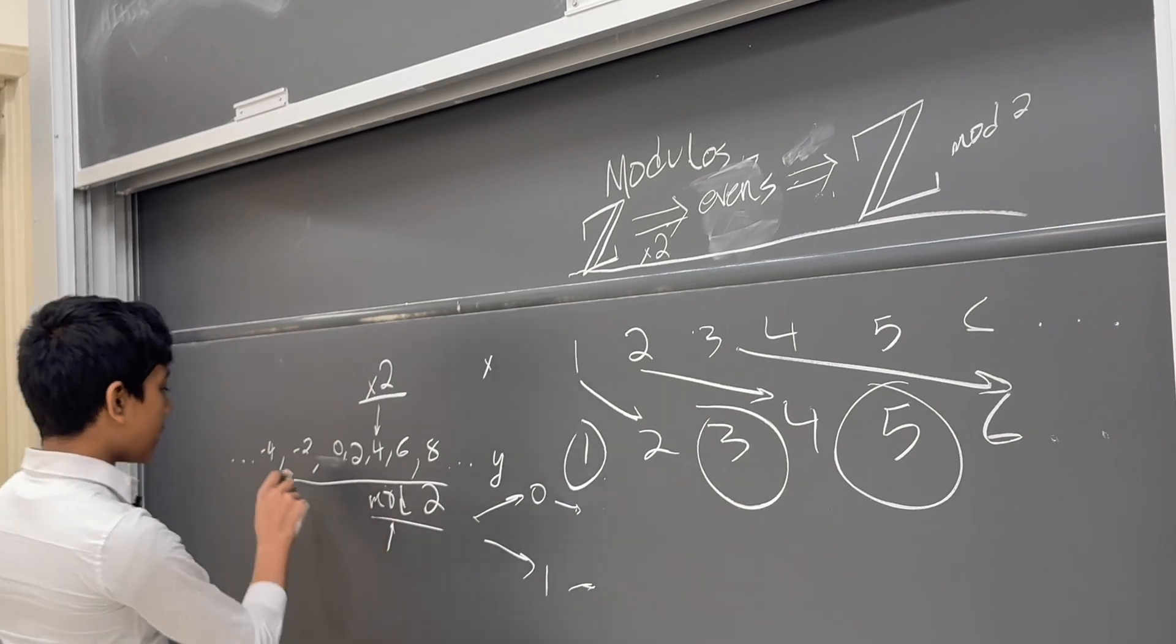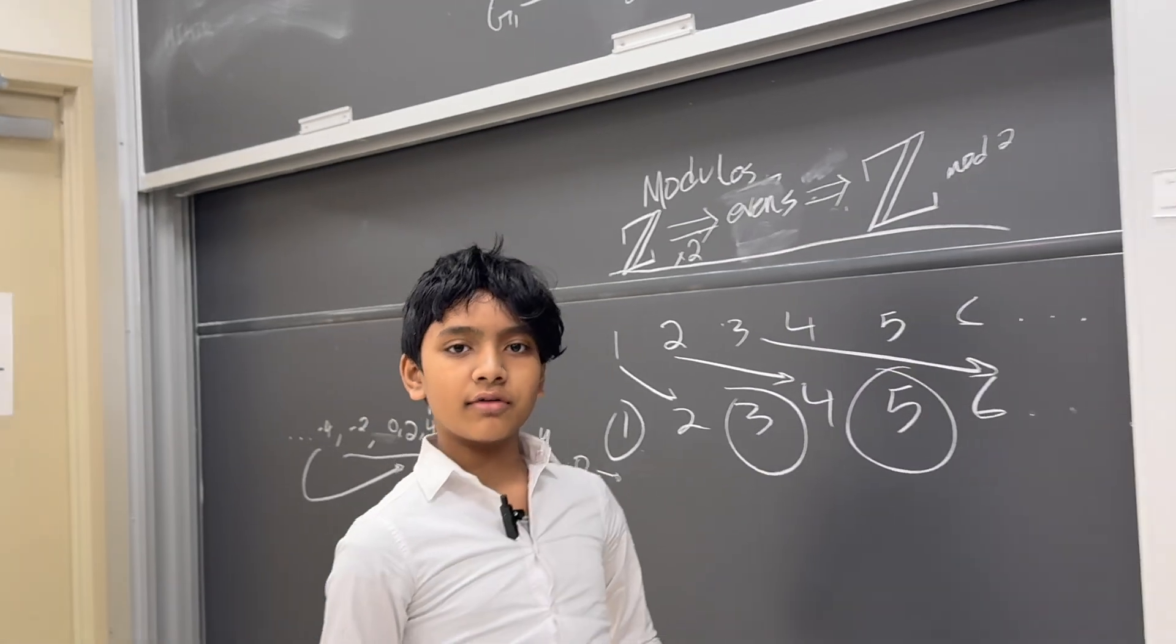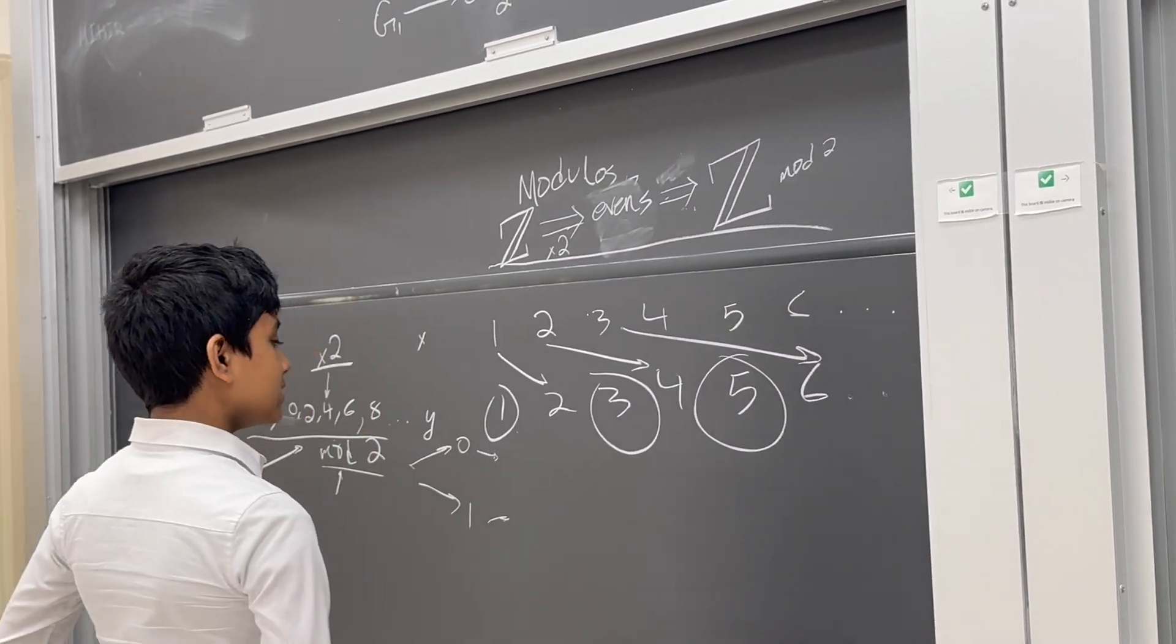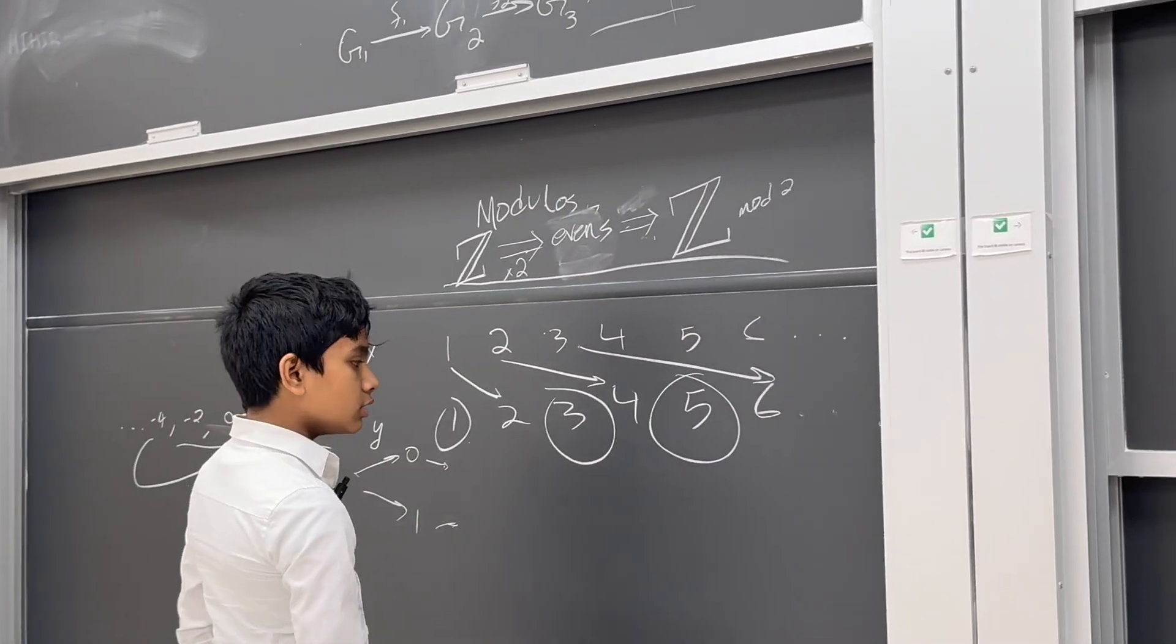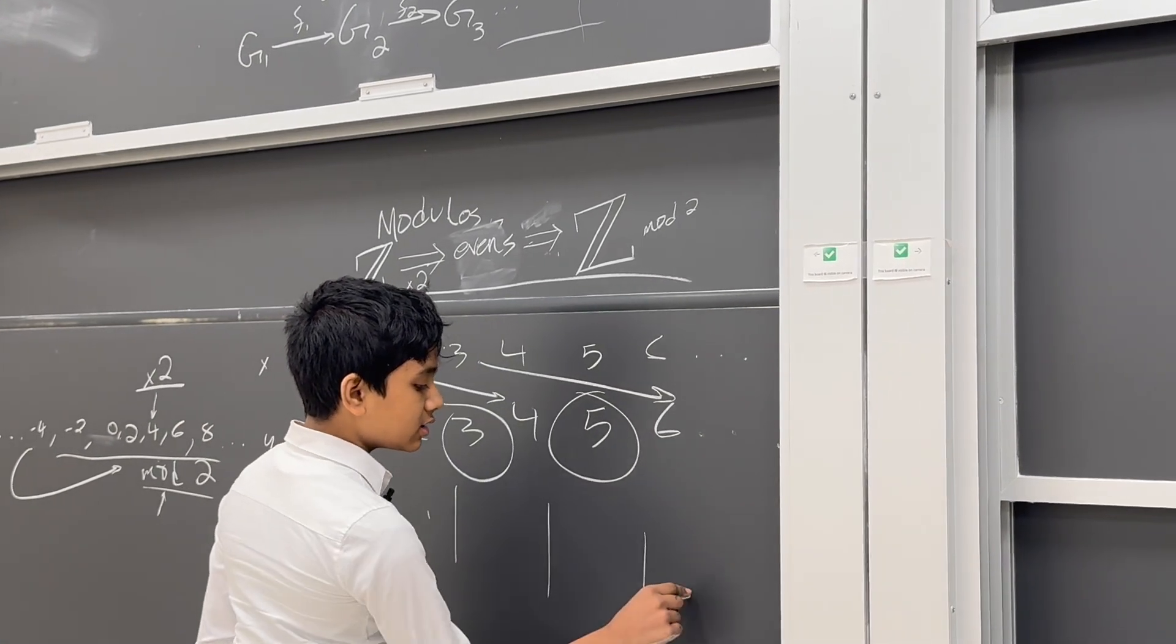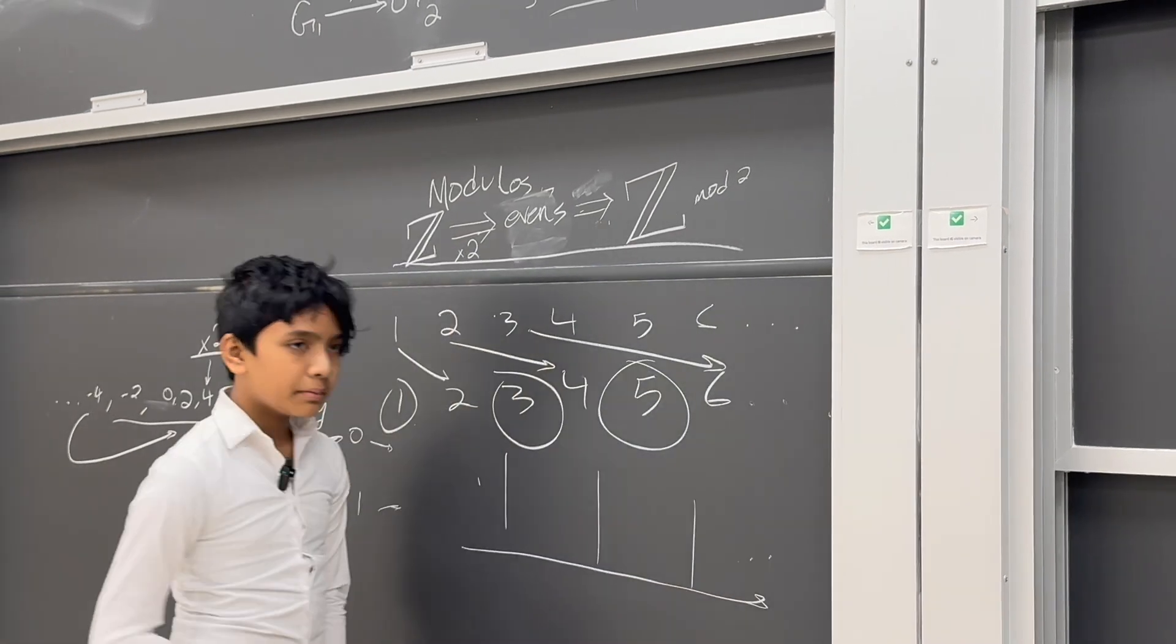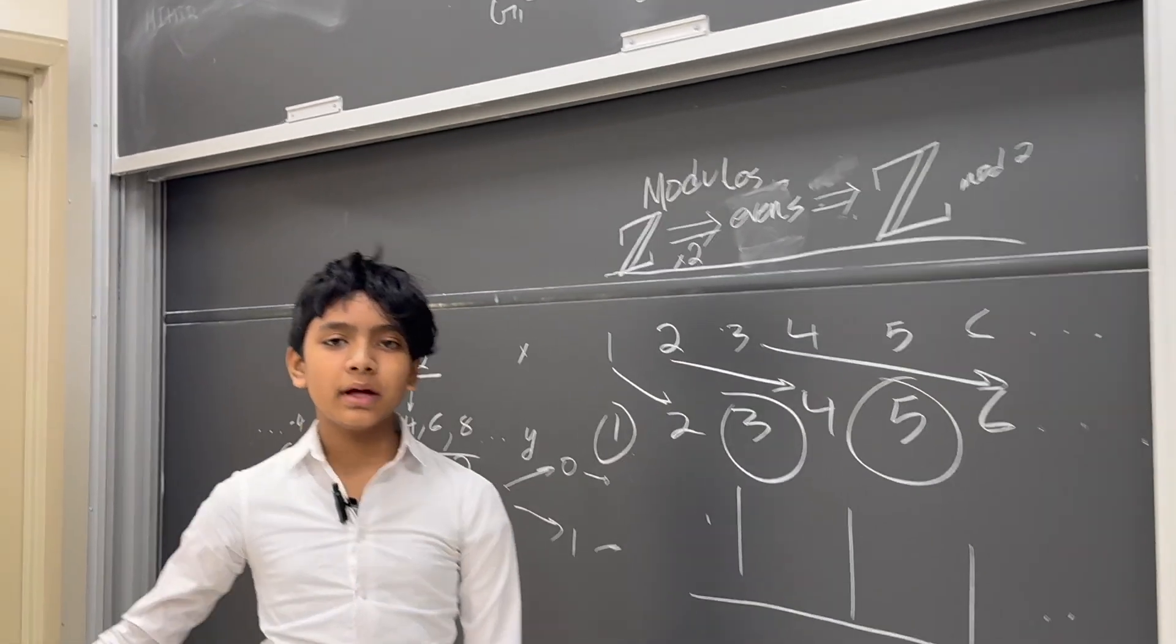So this maps to 0, the entire image. So that's an example of a short exact sequence. Now a long exact sequence is just many short exact sequences spliced together in a line. They have many applications in homomorphism, but I haven't learned that yet, so that's what we'll get to next time.